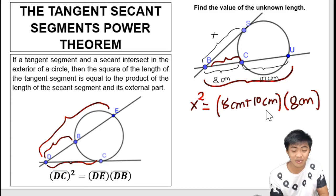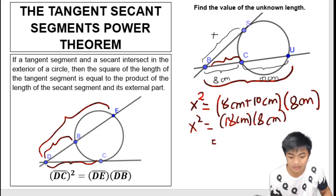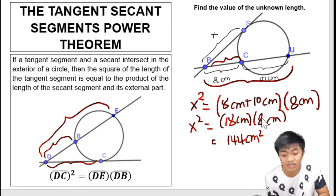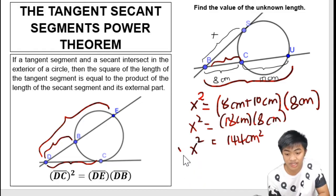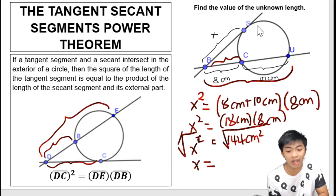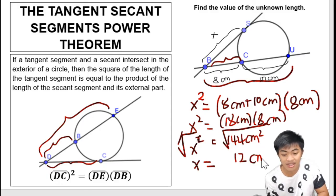So the equation is X squared equals 18 times 8, which is 144 square centimeters. To solve for X, we take the square root of both sides. So X equals the square root of 144, which is 12. Since we take the square root of square centimeters, the unit becomes centimeters. So the unknown length is 12 centimeters.